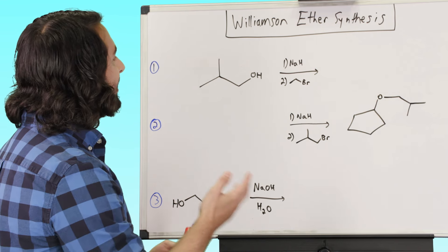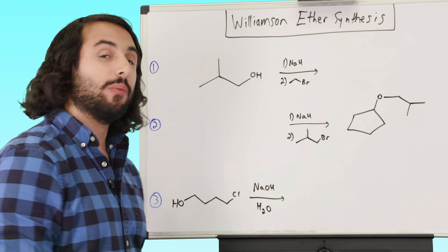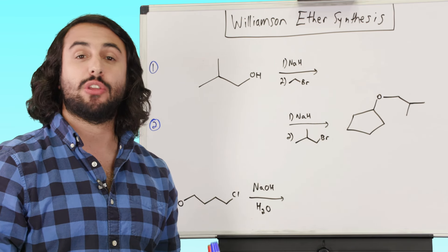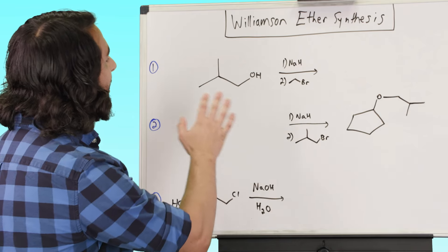And we know that the only time we see that reagent is for oxymercuration, demercuration. And so we can immediately make that correlation there. This is a little tougher because we're not seeing that. Maybe with sodium hydride, we might recognize it. But that just means we have to think critically, right?